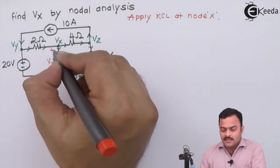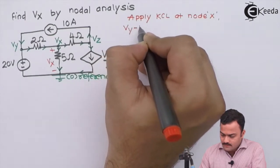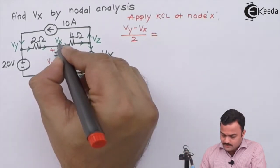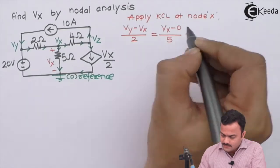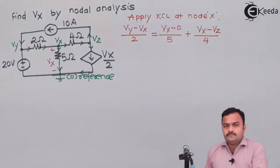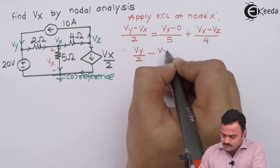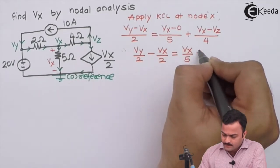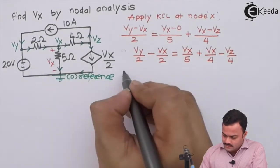At X, three branches are connected. One is incoming and the incoming will have the equation Vy minus Vx upon 2. And outgoing, starting at Vx ending on reference and resistance is 5. Similarly over here, Vx minus Vz upon 4. Upon simplifying we will have Vy by 2 minus Vx by 2.